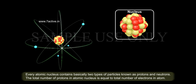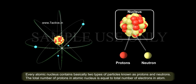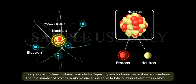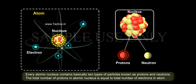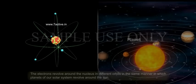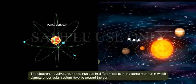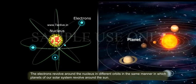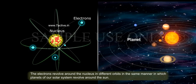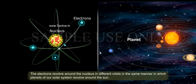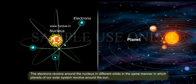Every atomic nucleus contains basically two types of particles known as protons and neutrons. The total number of protons in atomic nucleus is equal to total number of electrons in atom. The electrons revolve around the nucleus in different orbits in the same manner in which planets of our solar system revolve around the sun.